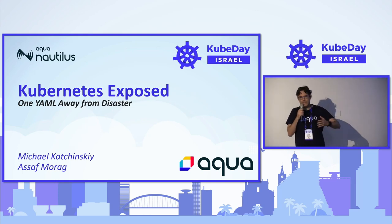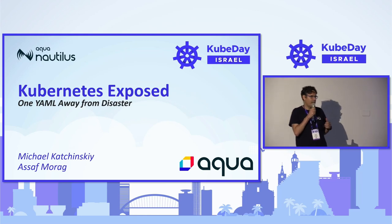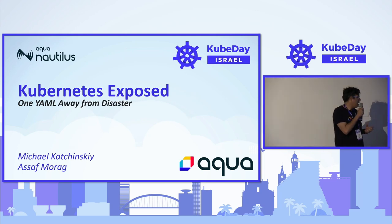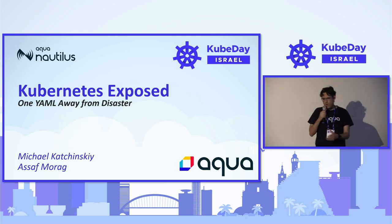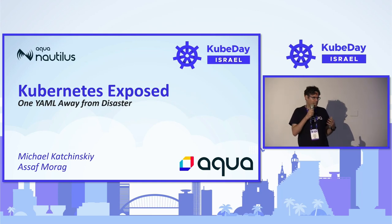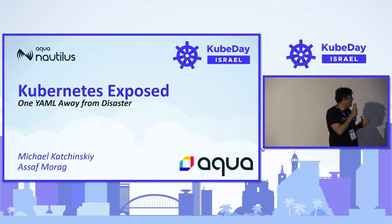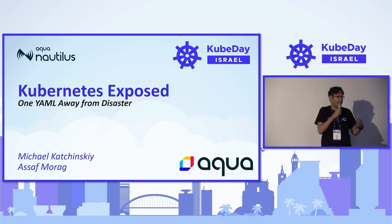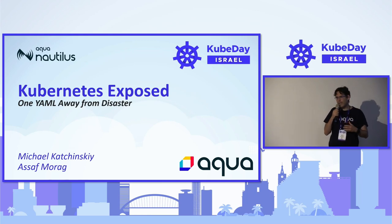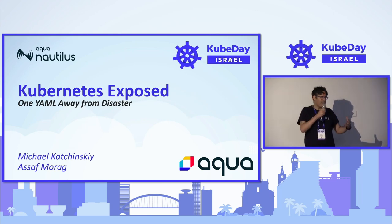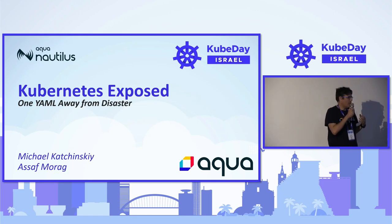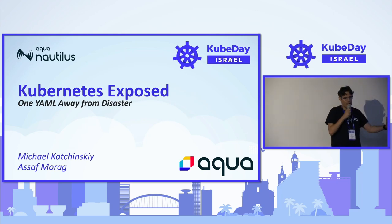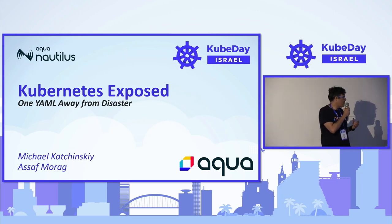Aqua is a synapse company. We aim to protect all the workloads and environments of cloud native, starting from code to CI/CD, registries and workloads. Aqua Nautilus is the research team at Aqua and we want to learn about the attacks, the attackers, what they are doing, how they are doing it, what they are doing after they get in — in order to understand how we can write detections and help our customers and the community to protect against these kinds of attacks.